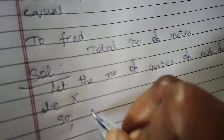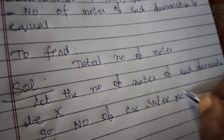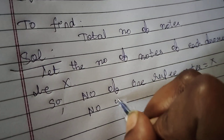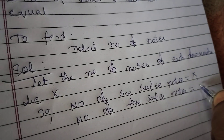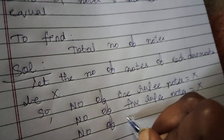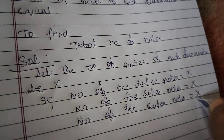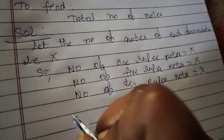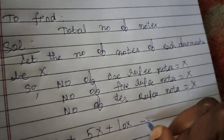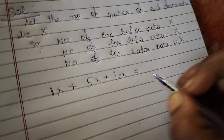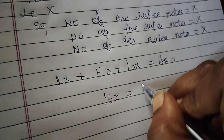So, number of 1 rupee notes is equal to x, number of 5 rupee notes is equal to x, and number of 10 rupee notes is equal to x. Therefore, 1x + 5x + 10x = 480. That gives 16x = 480.